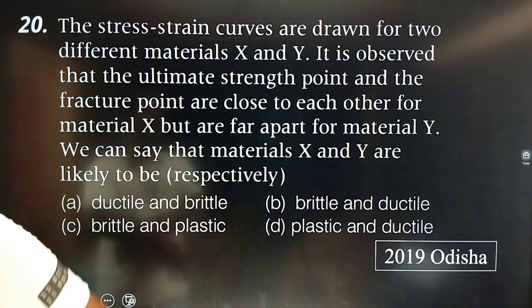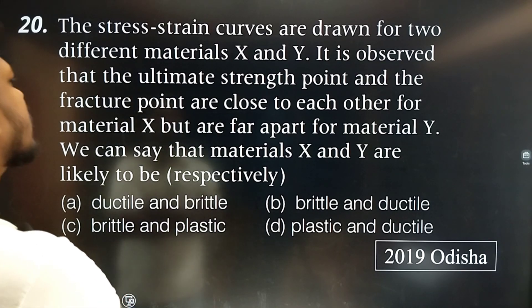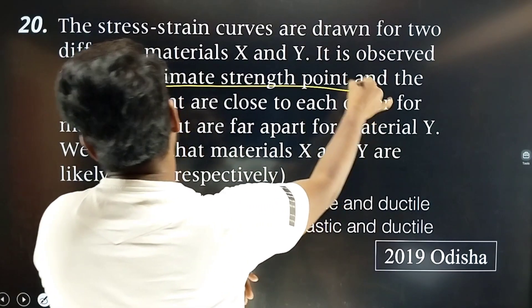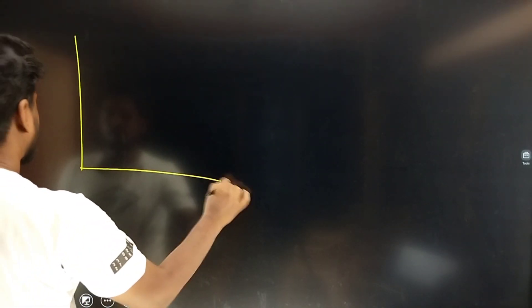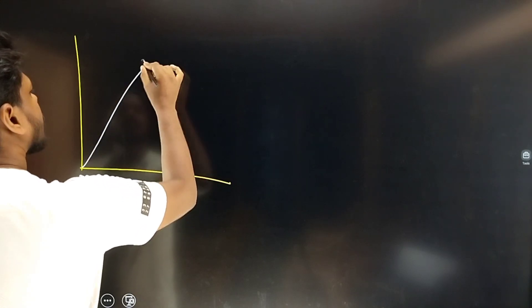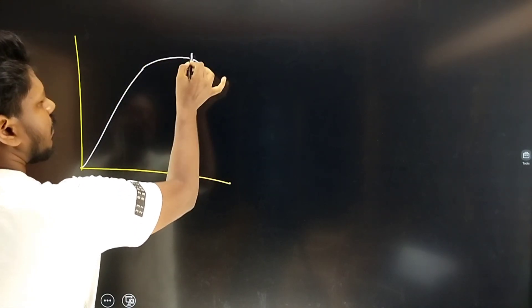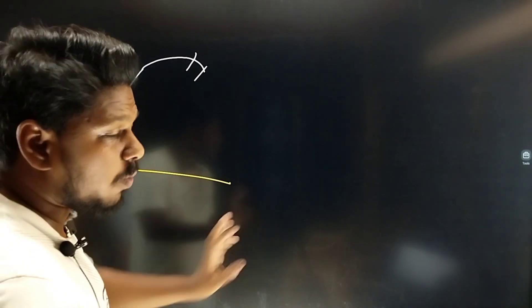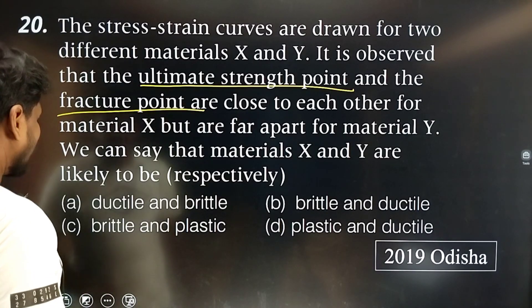The stress-strain curves are drawn for two different materials X and Y. It is observed that the ultimate strength point and the fracture point are close to each other. Looking at the graph from the textbook: if the ultimate strength point and breaking point are close together, the material is brittle.